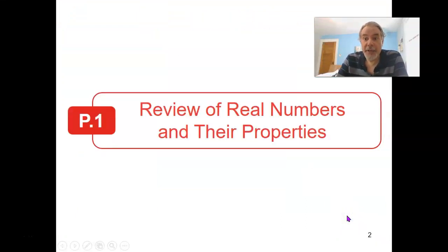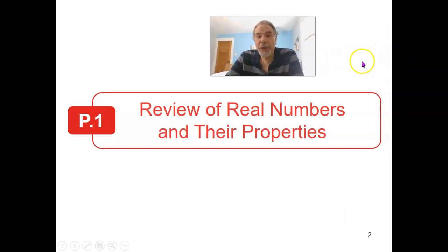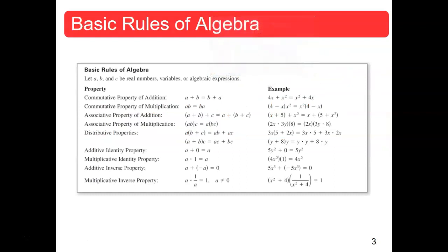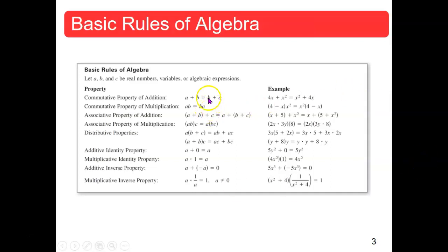Section P.1 is called 'Review of Real Numbers and Their Properties.' If you look at this section in the book you'll find boxes listing a bunch of basic rules of algebra — numbers and how they work. You should be familiar with all of these properties, not necessarily the names of all of them, although I might mention those names as we go along.